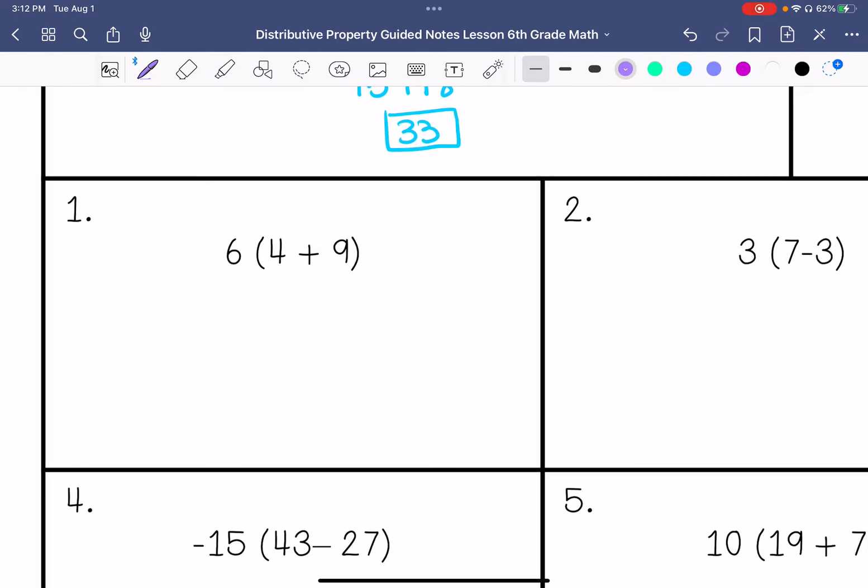All right, number 1. 6 times 4 is 24, 6 times 9 is 54. So this is 78.